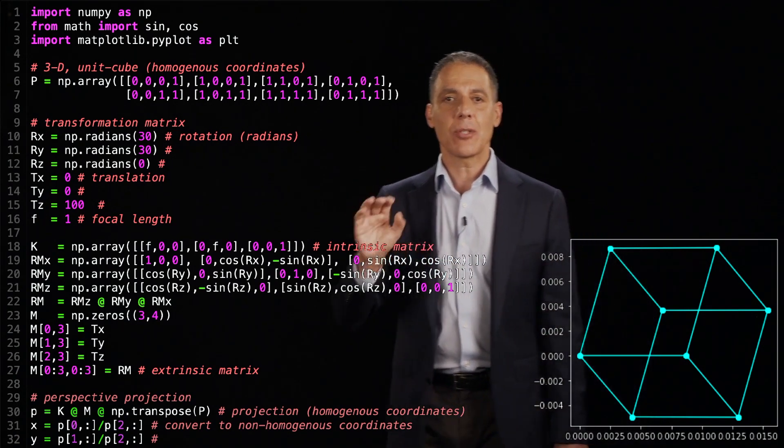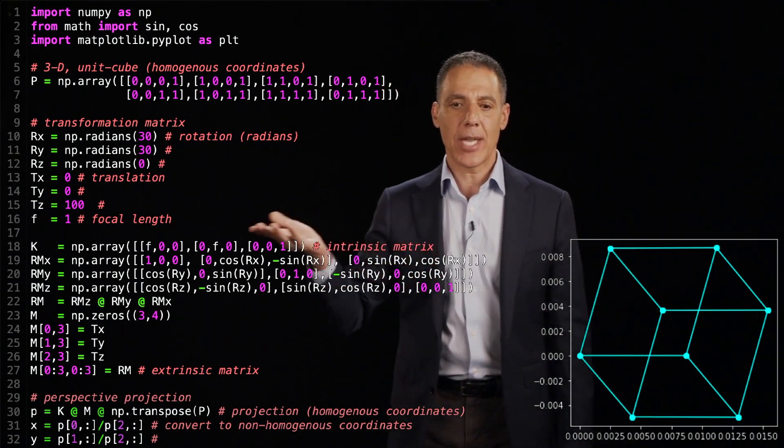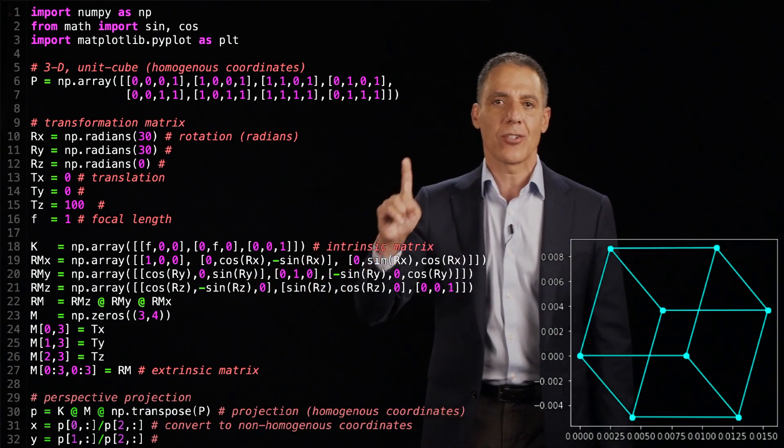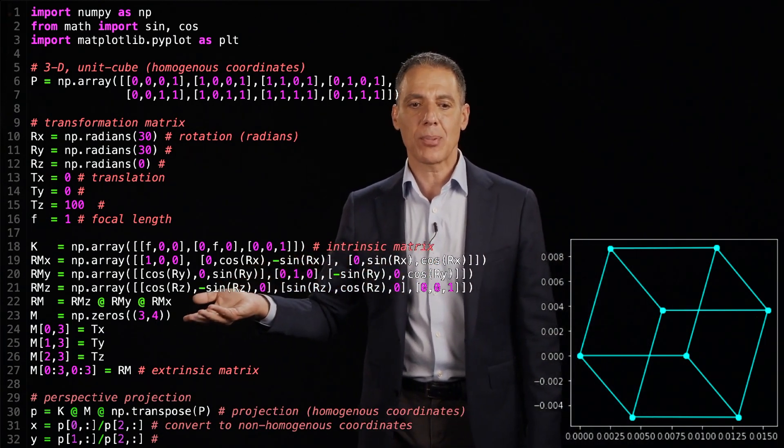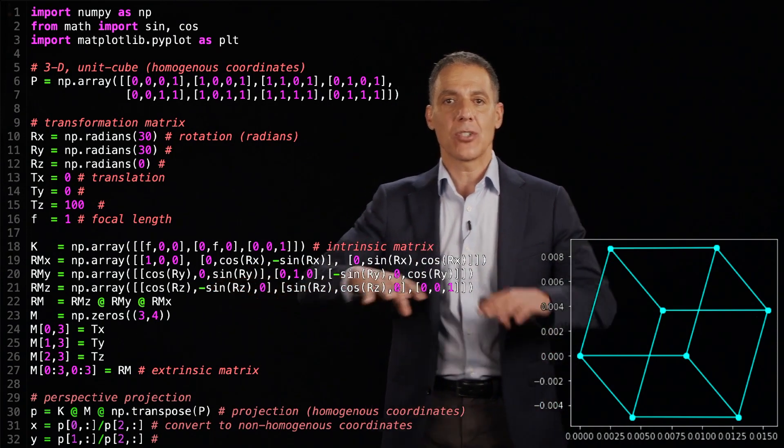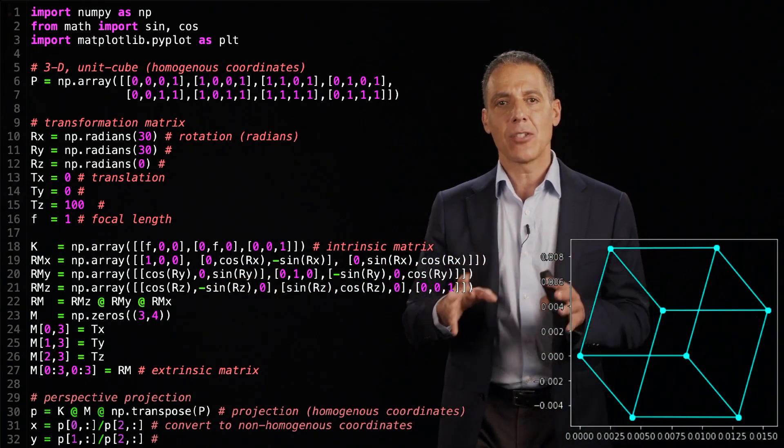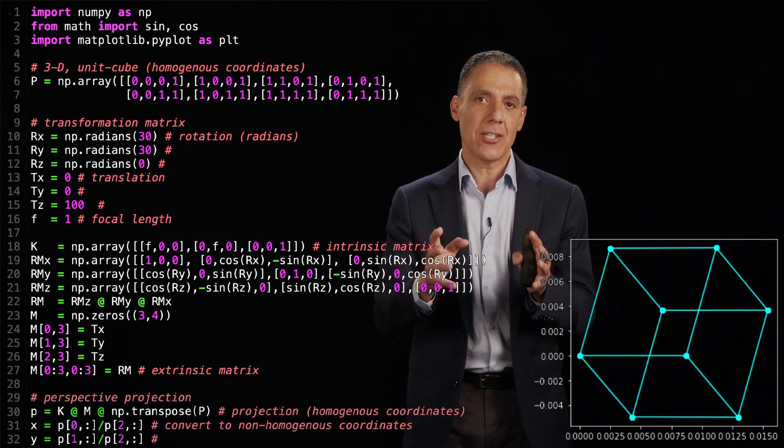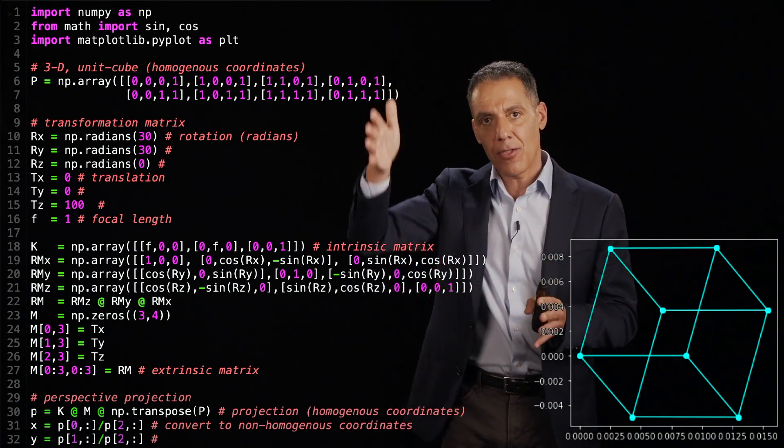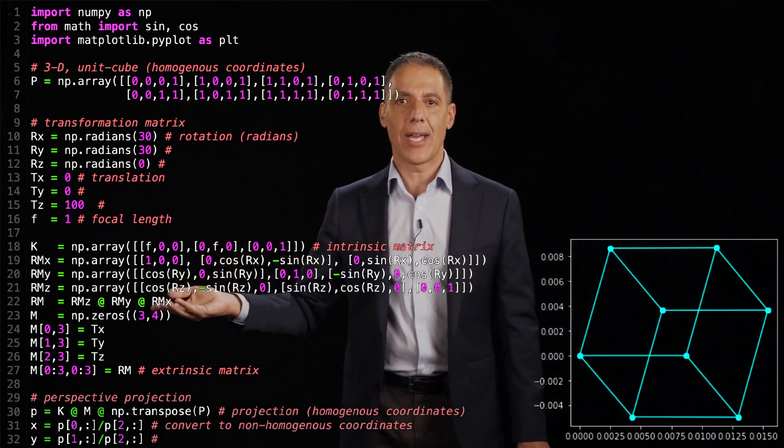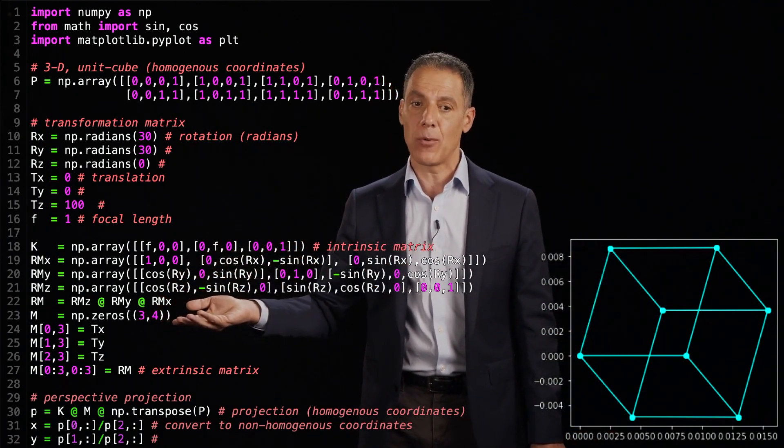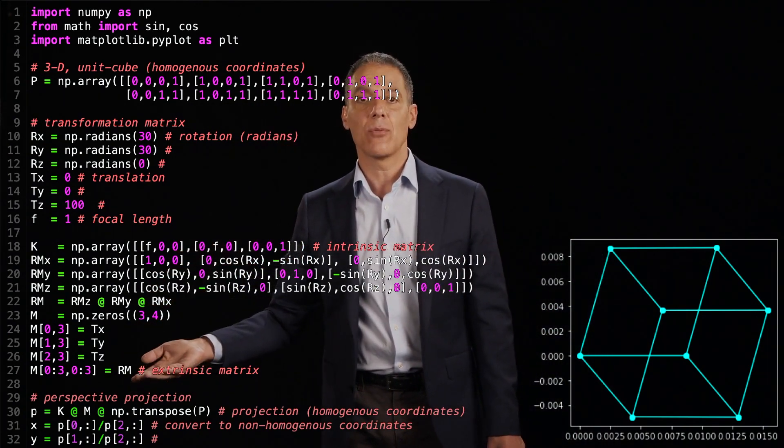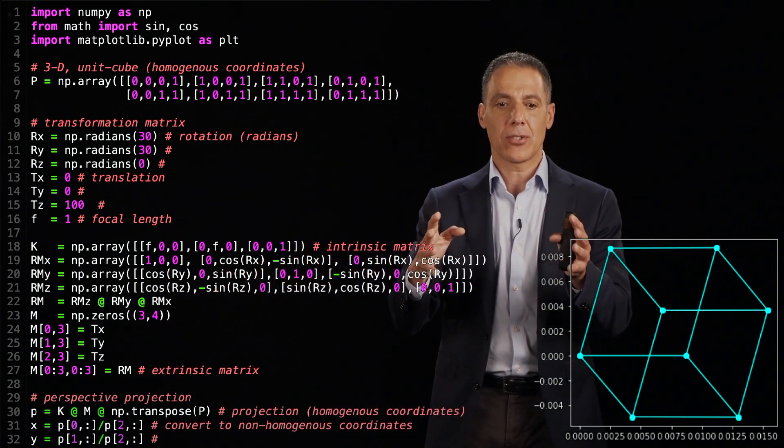Now, the extrinsic matrix has to be built up in steps. The first thing we have to do is compute the Rx, Ry, Rz. Those are the equations that I gave you on the previous slide. And then I'm going to multiply those together to get Rm, which is the full rotation matrix. And now what I have to do is pack everything together. Because my intrinsic matrix K is fine. But my extrinsic matrix, I have to pack together the rotation. That's the first 3x3. And then the 3x1, which is the translation. So, I'm going to define M to be 3x4. I'm going to pack in the translation into the last column. And then I'm going to pack in the rotation into the first 3x3 parts.